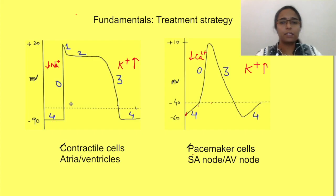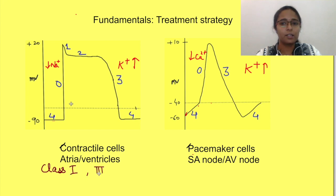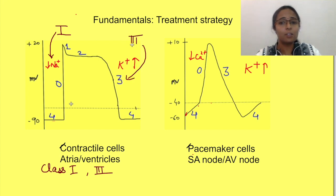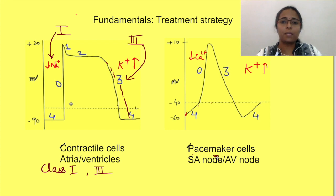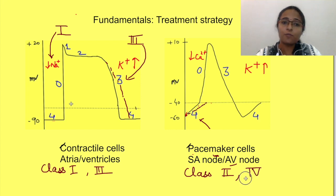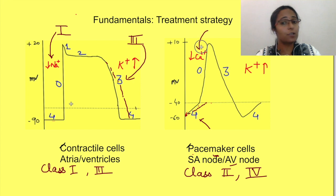For any interference in atria or ventricle cells, class 1 drugs or class 3 drugs are used. Class 1 drugs — sodium channel blockers — will affect phase 0, which occurs due to entry of sodium ions. Class 3 drugs — potassium channel blockers — will affect phase 3 and slow it down. For arrhythmias involving pacemaker cells such as the SA node or AV node, class 2 drugs (beta blockers) are used, acting on phase 4 to decrease its slope, or class 4 drugs (calcium channel blockers) are used, acting on phase 0.